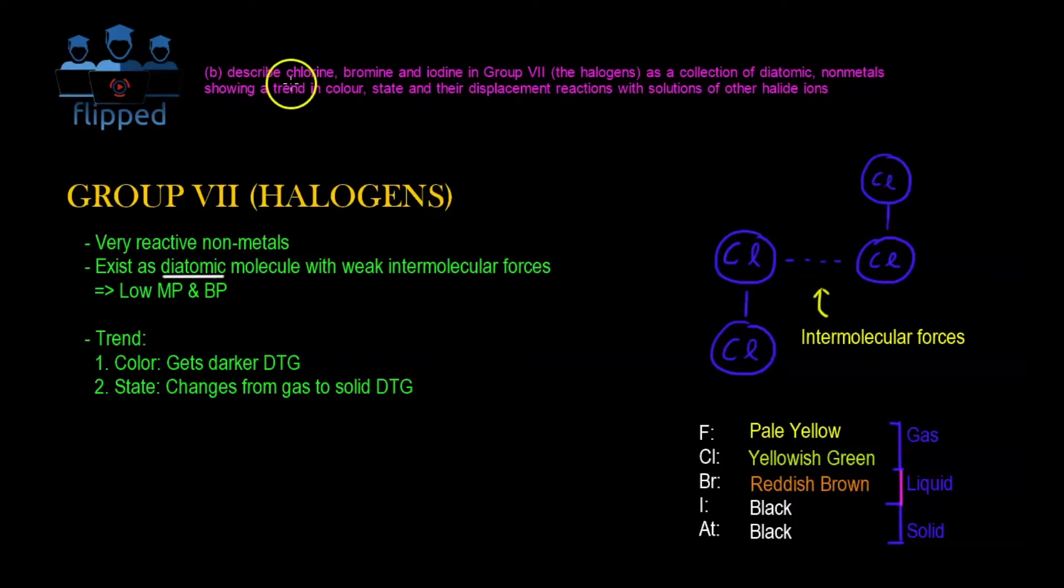Hello, welcome to FLIPP. Today we are on Group 7, also known as halogens. Halogens are very reactive non-metals. They exist as diatomic molecules with weak intermolecular forces.